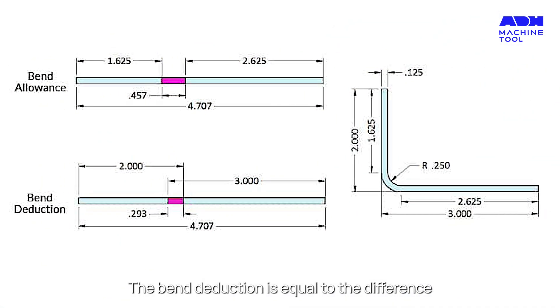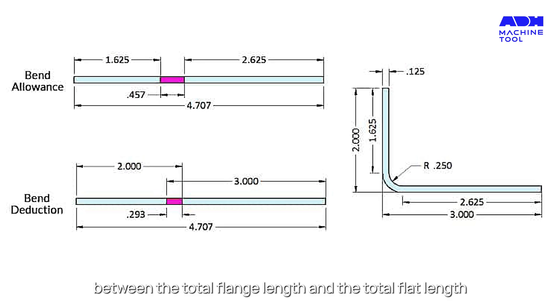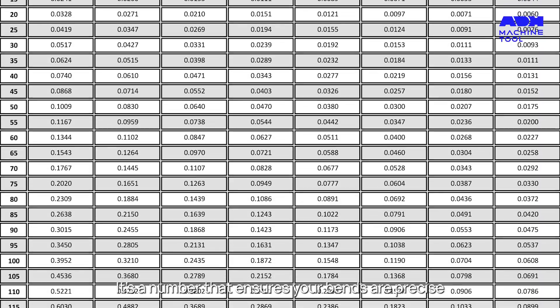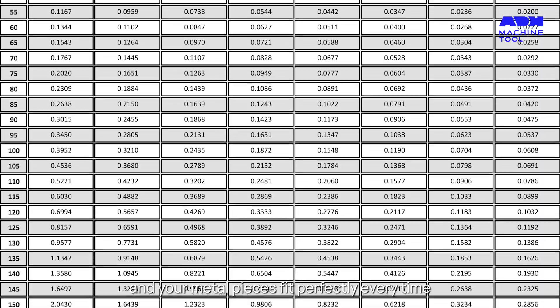The bend deduction is equal to the difference between the total flange length and the total flat length. It's a number that ensures your bends are precise and your metal pieces fit perfectly every time.